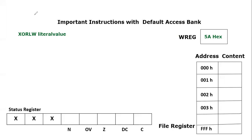Bismillahirrahmanirrahim. Assalamu alaikum everyone. In this video tutorial we are going to learn a new instruction of the PIC18F microcontroller, and that is XORLW, or Exclusive OR Literal to Working. Exclusive OR is basically a logical operation. This instruction will be used to perform a logical XOR operation between the working register and the literal value given inside the instruction. Let's take an example to elaborate this instruction further.